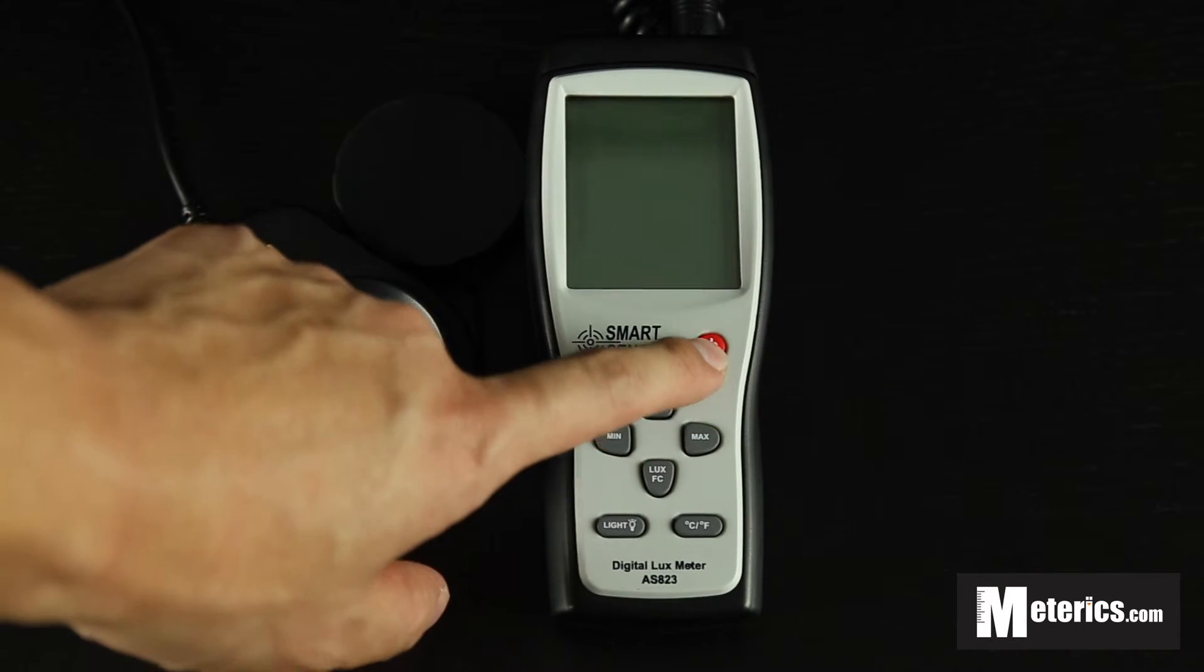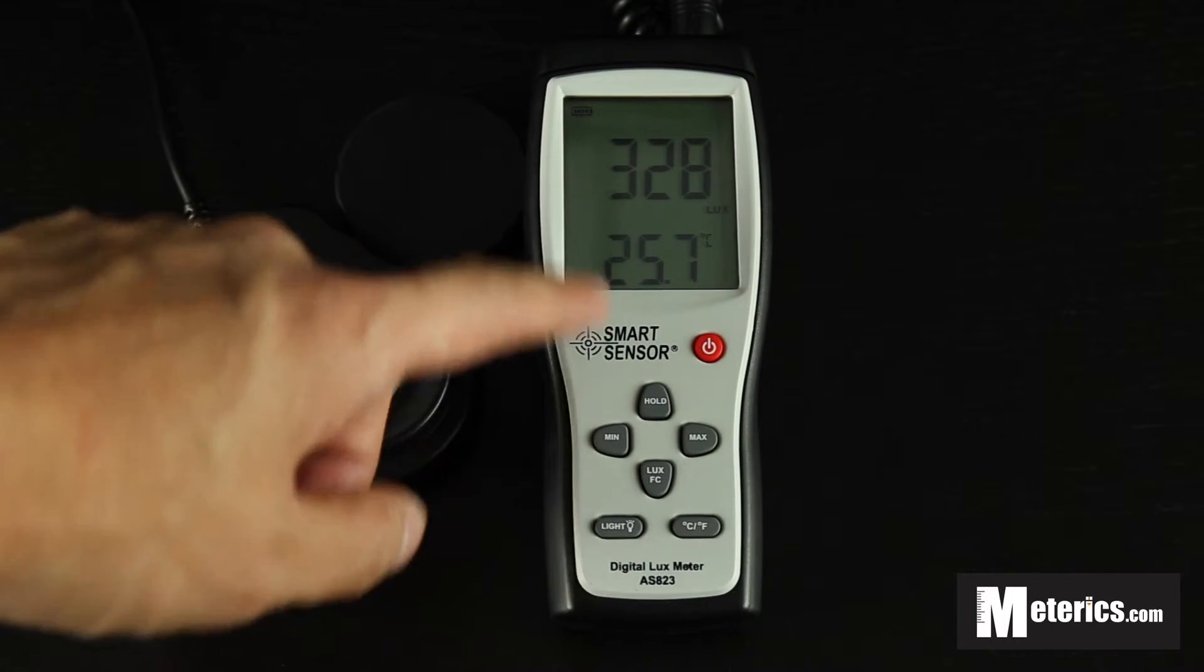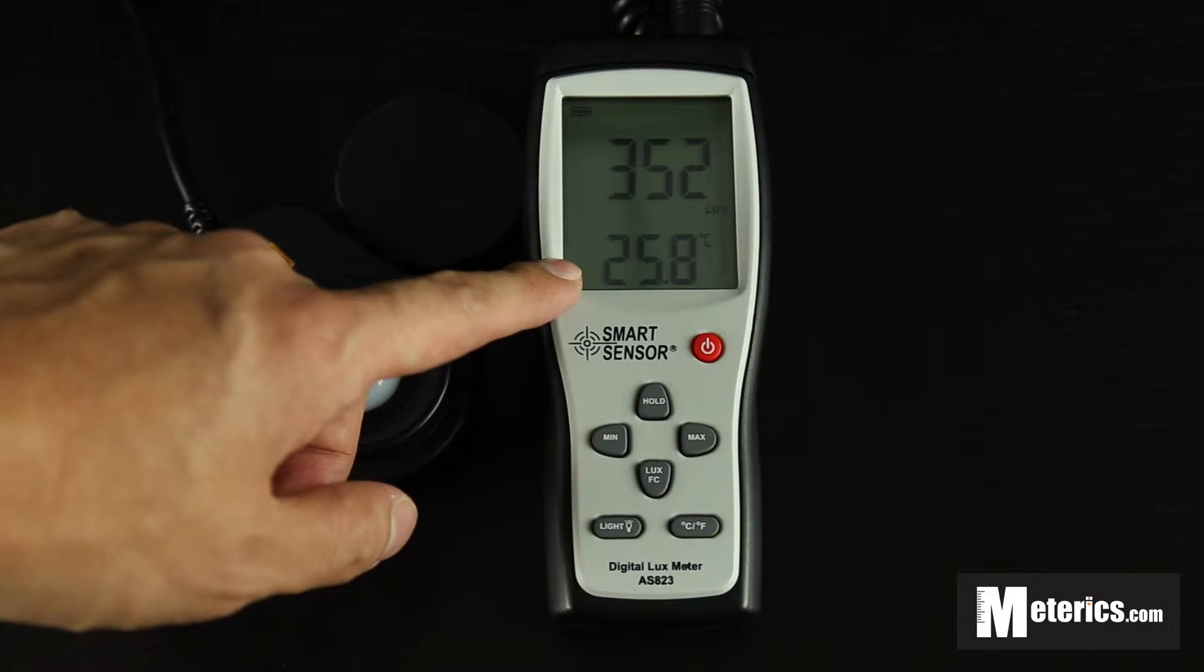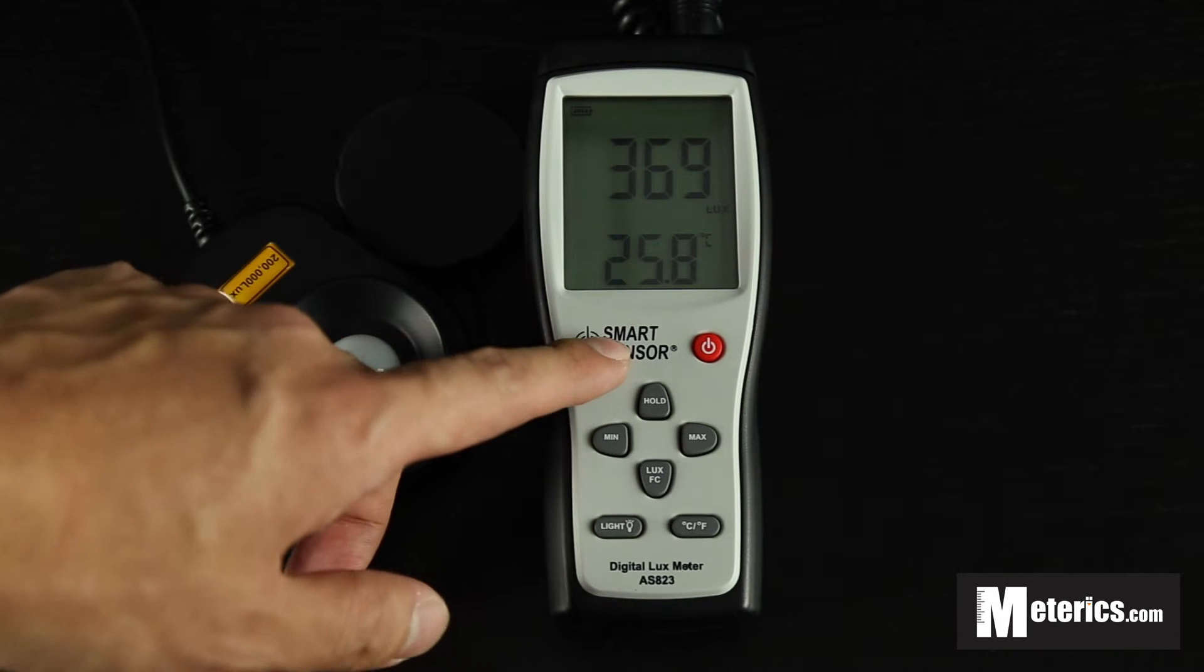So let's turn this meter on. Just click that once and as you can see straight away you'll get readings. The top part is the lux, basically measuring the light, and the bottom half is the temperature. This meter actually comes with a built-in thermometer.